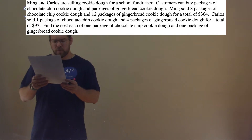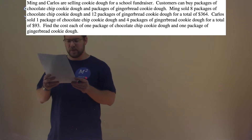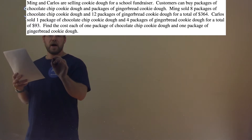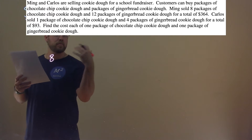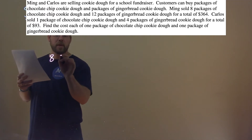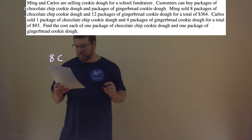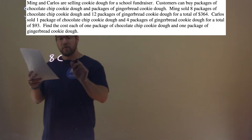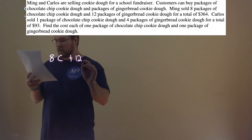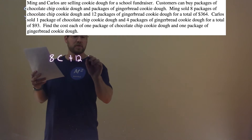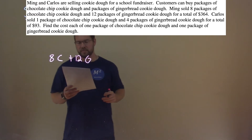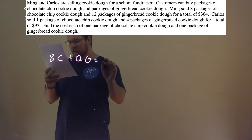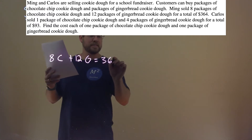So, what do we get? Well, the first thing they tell us: Ming sold 8 packages of chocolate chip cookie dough. So I'm going to say he sold 8 packages, and the price of a chocolate chip cookie dough I'm going to represent as the variable C. Then they said he also sold 12 packages of gingerbread cookie dough — represented by the variable G. And that came out to be a total of $364.